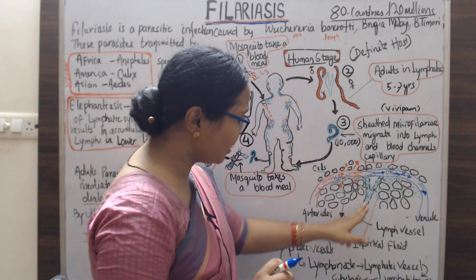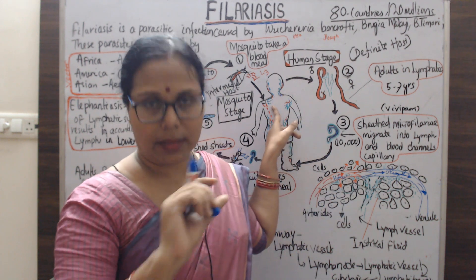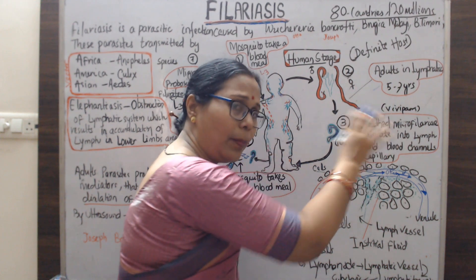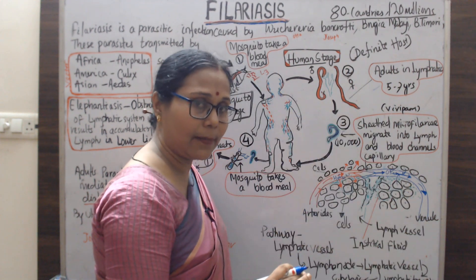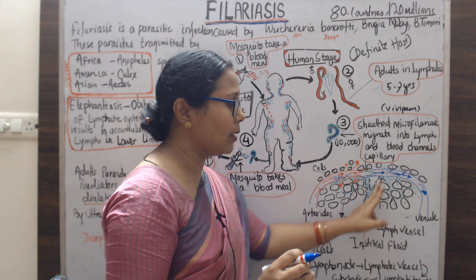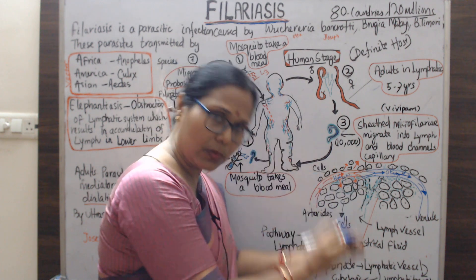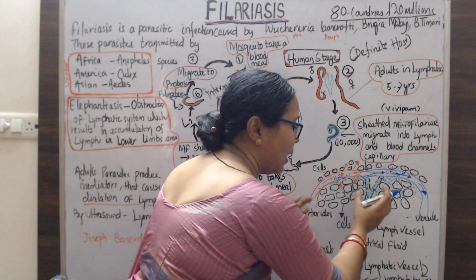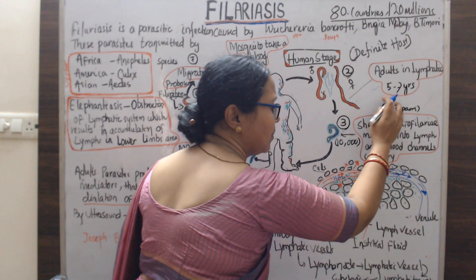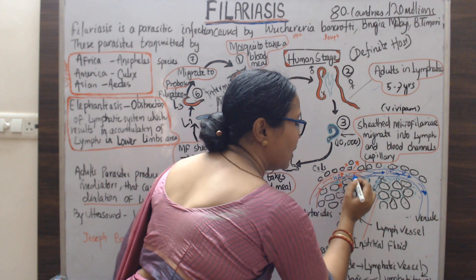When adult parasites enter the lymphatic vessels in large numbers, they block the vessels. The lymphatic fluid becomes stagnant and cannot move, causing enlargement and swelling of the lymphatic vessels. After mating, microfilariae are released and enter the blood circulation.